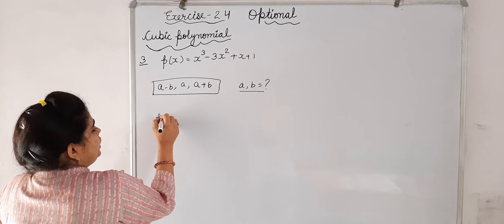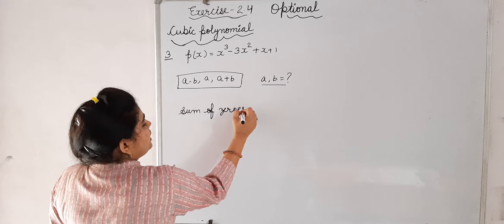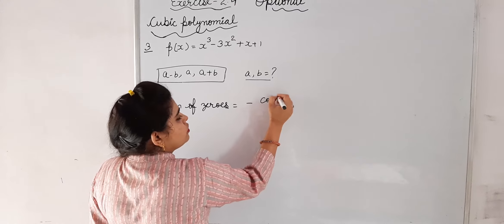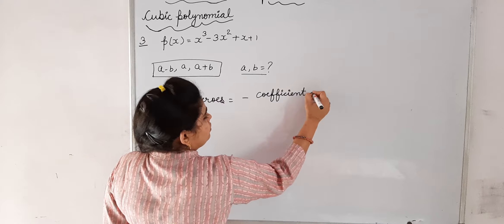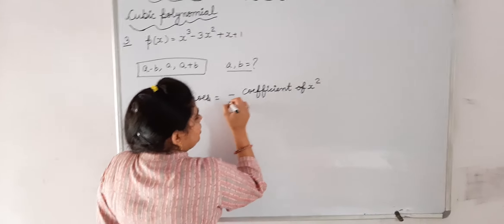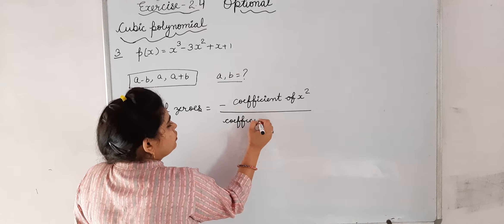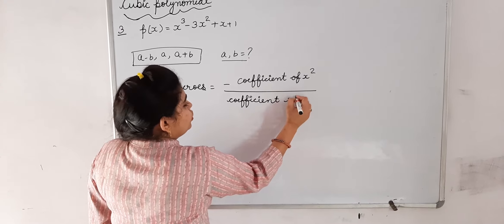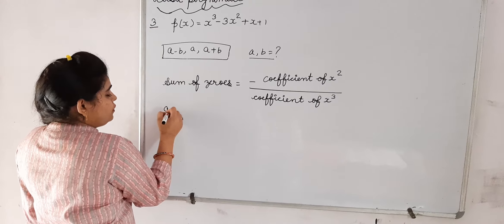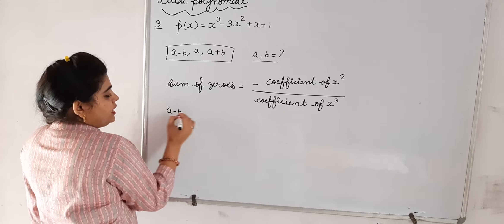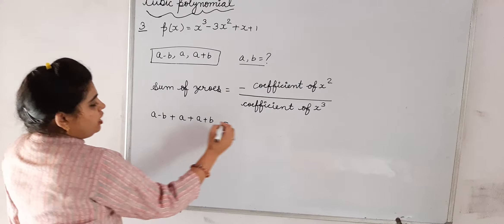we know that the sum of zeros of a cubic polynomial is minus the coefficient of x² divided by the coefficient of x³. According to this, since these are the zeros, the sum of zeros will equal (a - b) + a + (a + b), and after putting the values,